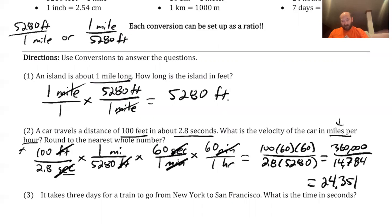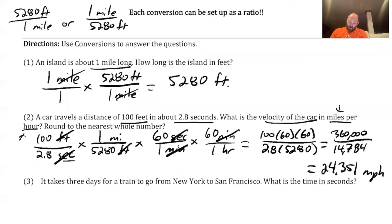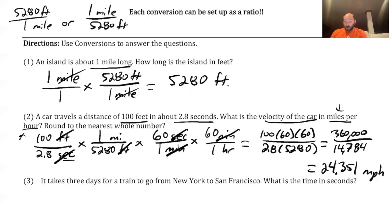And I get 24.351. I can be this exact, we usually wouldn't be, we probably rounded, but the velocity of the car is 24.351 miles per hour. All right. So that one was a good one, because we had to do two conversions at that same time. We had to get rid of the feet and get rid of seconds.